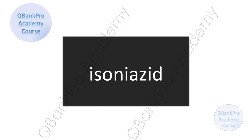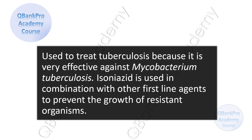The correct answer is isoniazid. Isoniazid is used to treat tuberculosis because it is very effective against Mycobacterium tuberculosis. Isoniazid is used in combination with other first-line agents to prevent the growth of resistant organisms.